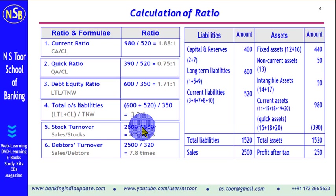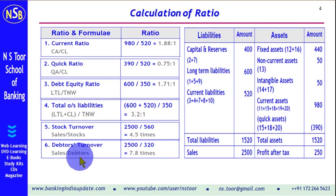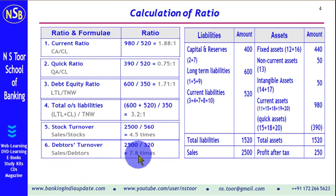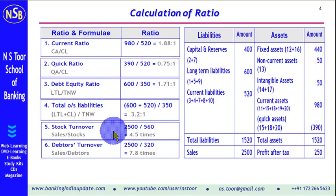Debtors turnover ratio is calculated as sales divided by debtors. Sales are 2,500 and debtors are 320, giving a ratio of 7.8 times. Higher the turnover ratio, the better it is.